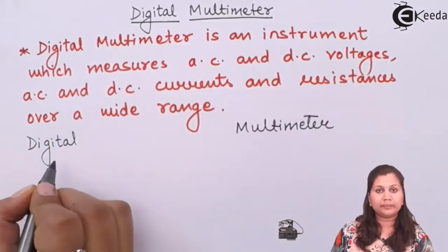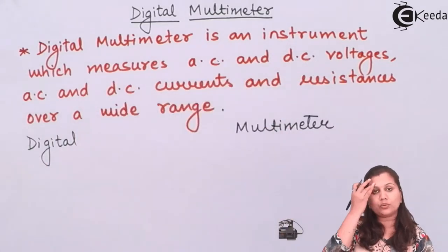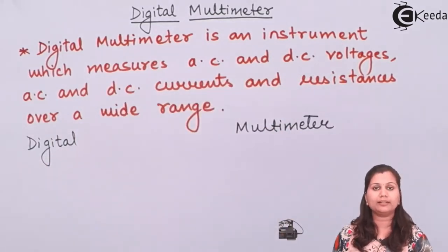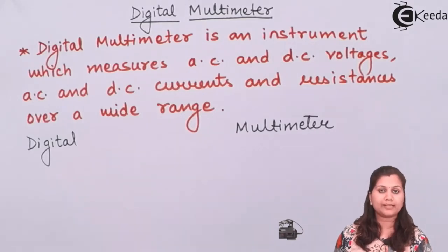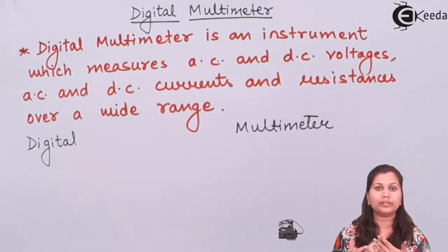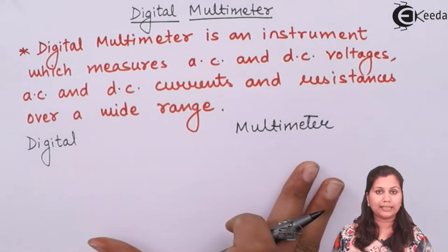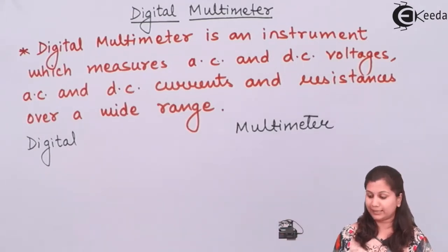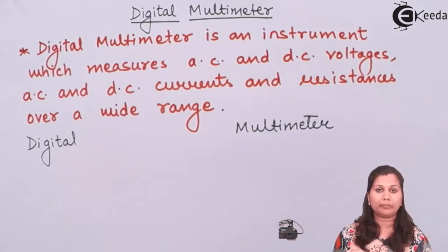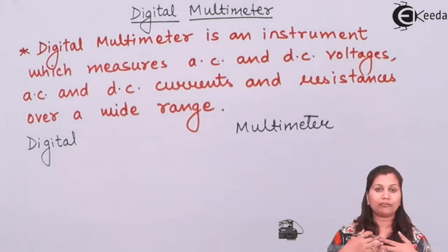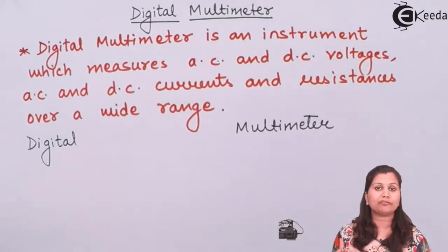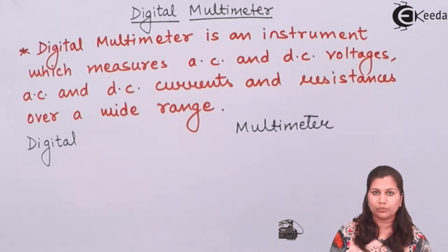Digital means that this instrument is going to give us the output in a digital form — in the form of numbers, it is going to display the output. Whereas multimeter means that it is a metering device which is going to measure something, and multi means that it can be used for various types of measurements.